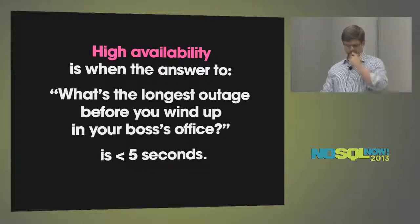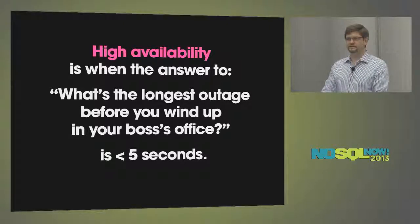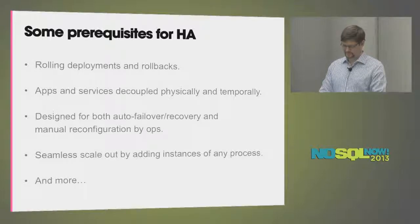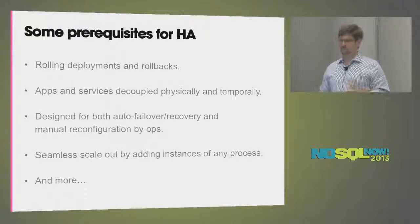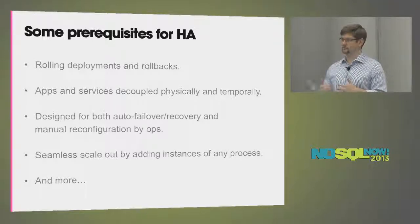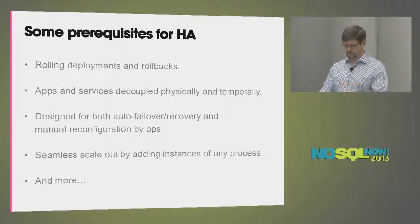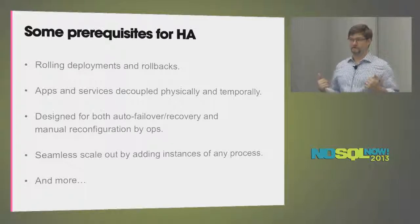I like to define high availability as the amount of time that's down before you have to have an uncomfortable conversation. In our case it was about five seconds. In order to do that, you need to support rolling deployments and rollbacks without any downtime. What that means is you're going to have multiple versions of your code and data structures live at the same time. If you're adding a property, removing a property, changing the shape of your objects, multiple versions are going to be live simultaneously. We had a lot of messaging, so different message structures being passed between applications all have to be forward and backward compatible, so you can start rolling out, have everything work, and roll back.